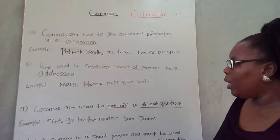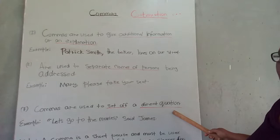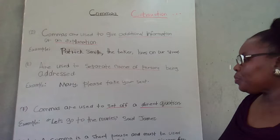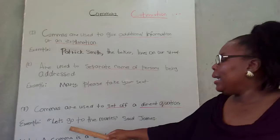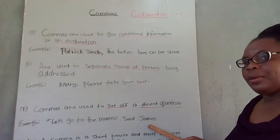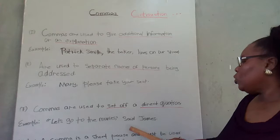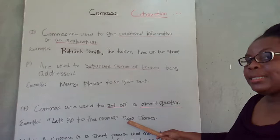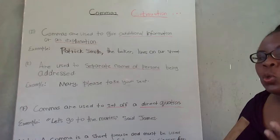Commas are also used to set off a direct quotation. For example: James said, "Let's go to the movies." Someone is saying "let's go to the movies," and the person who said it is James. So you put a comma within the quotation marks, and then you write "said James."